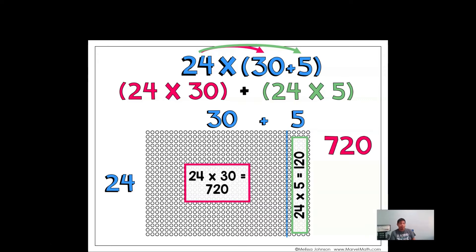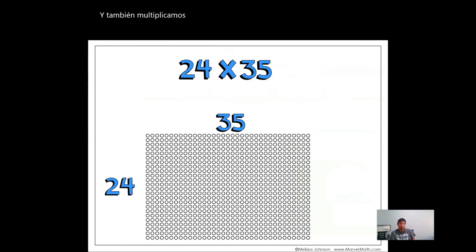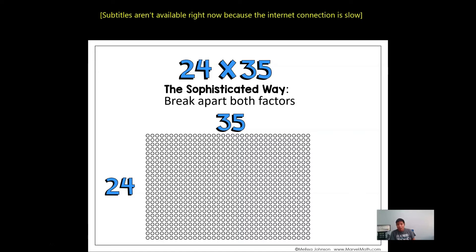Now, we take 720 and 120, and we add them both. And our answer is still 840. The sophisticated way is we break both factors apart.